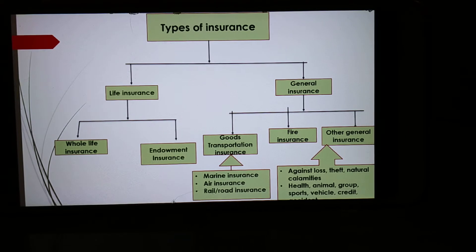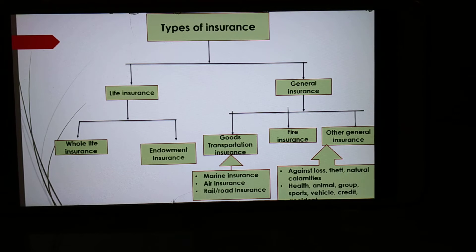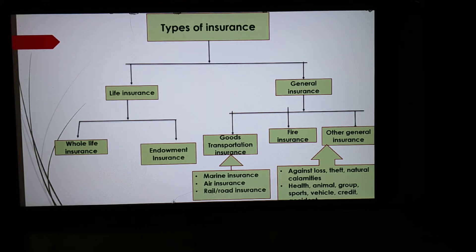Life insurance is divided into two types: whole life insurance and endowment insurance. In whole life insurance, the insurance company promises to pay the fixed amount to the heirs — the dependents of the deceased. The insured has to pay a fixed premium to the insurance company at fixed intervals. If natural death occurs and there is no reason to suspect death, the insurance company pays the full amount to the dependents. The principle of indemnity is not applied to life insurance, as life is precious and no price can be decided for it.